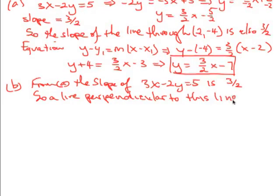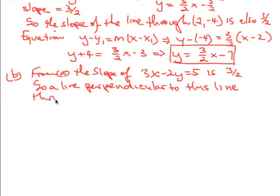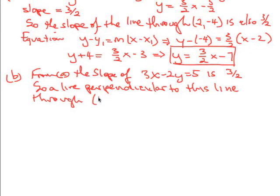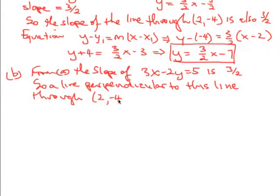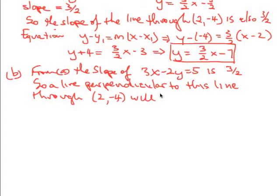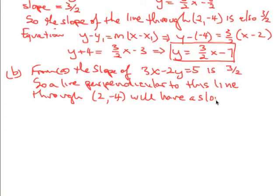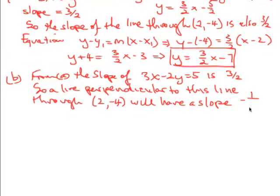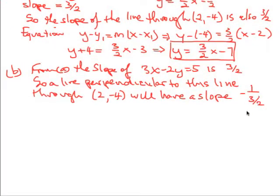So a line perpendicular to this line through the point (2, -4) will have a slope, and what will be the slope equal to? Well, it will be the negative reciprocal of this, will be negative 1 over 3/2, which of course is negative 2/3.